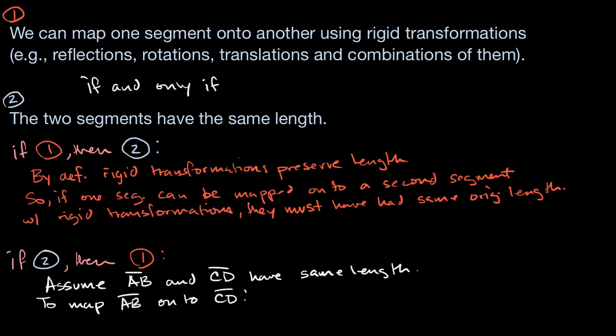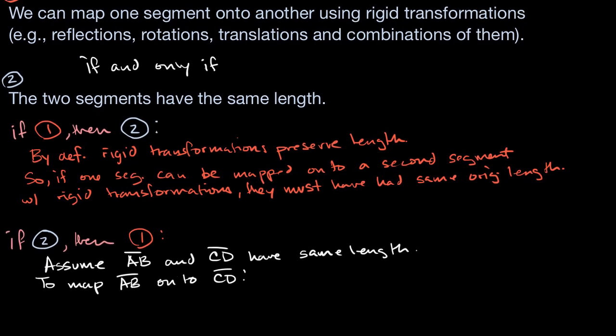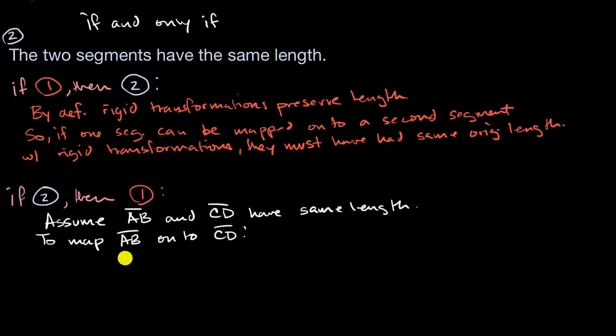To map AB onto CD, all I have to do, I can do this in two transformations every time. I first will translate AB so that point A is on top of point C.